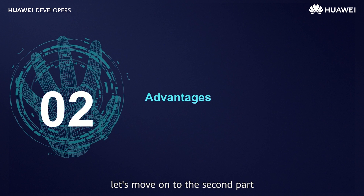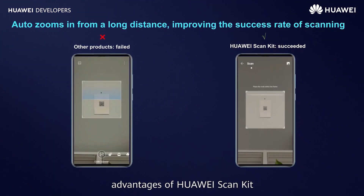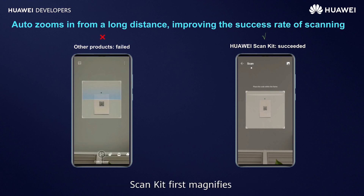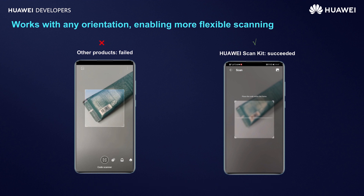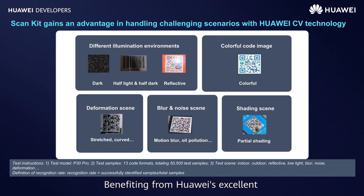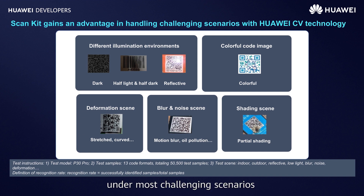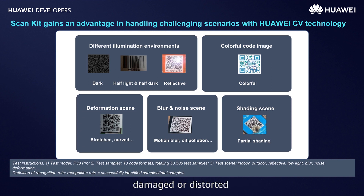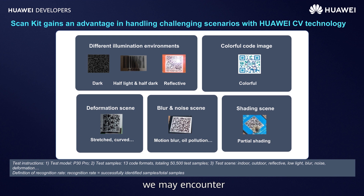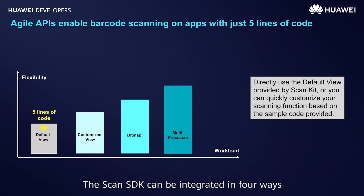Now let's move on to the second part: advantages of Huawei ScanKit. When detecting a 1D or 2D barcode from a long distance, ScanKit first magnifies the barcode before scanning it. No matter which way the barcode is oriented, ScanKit can still quickly and accurately identify it. Benefiting from Huawei's excellent image recognition technology, ScanKit accurately scans barcodes under the most challenging scenarios, such as under dim or bright lighting or when the barcode image is damaged or distorted. These scenarios cover most situations we may encounter.